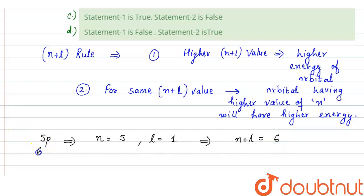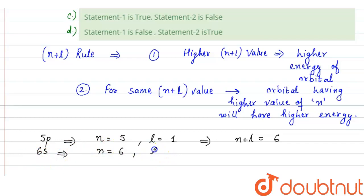Now for 6s, we have the 6th shell. So n is equal to 6 and we have the s sub-shell of the 6th shell. So s sub-shell means l is equal to 0. Here n plus l is equal to 6 plus 0, that is 6.